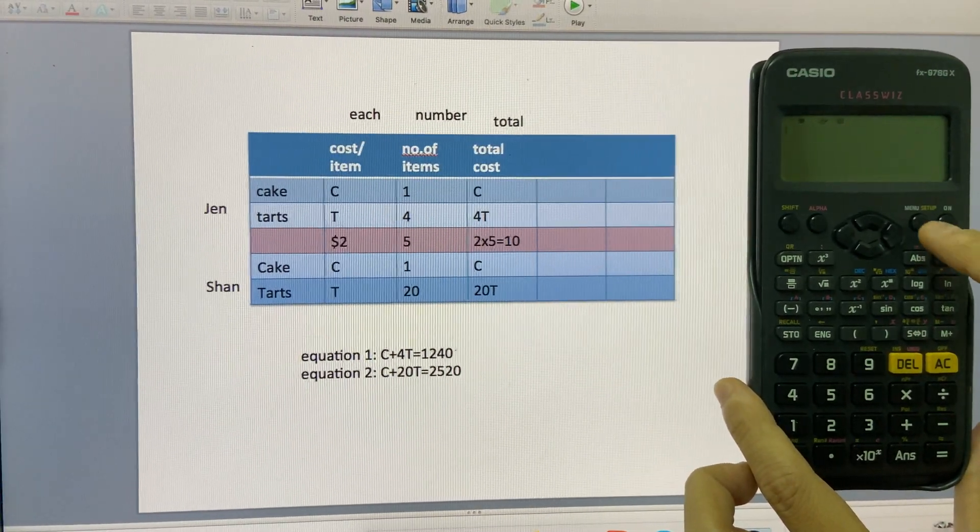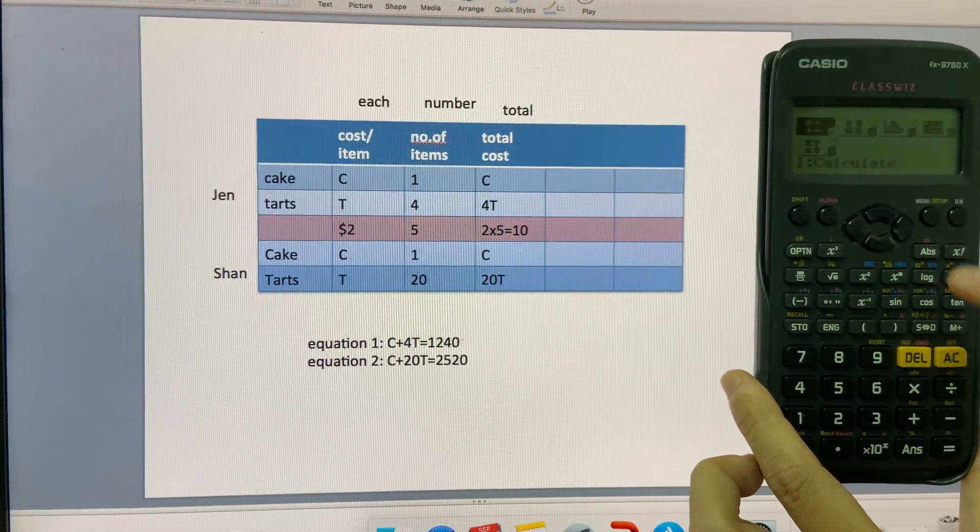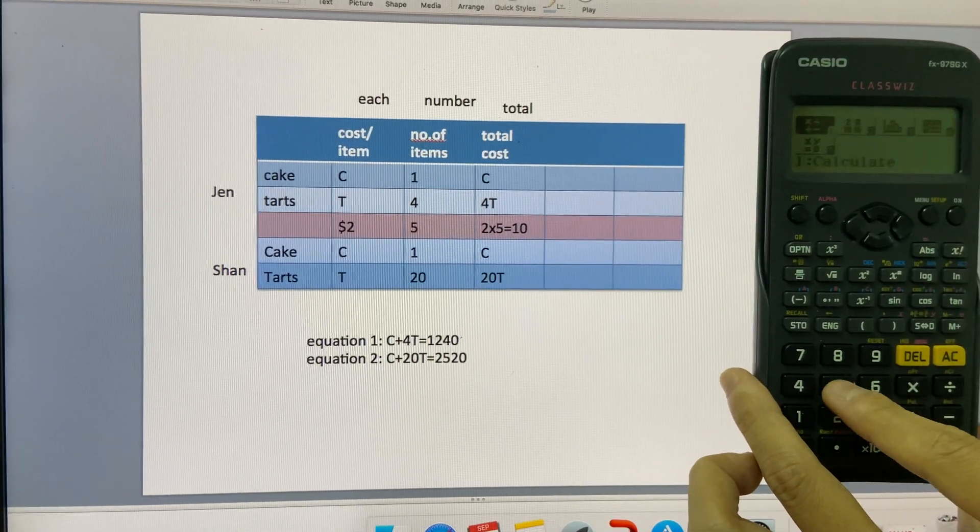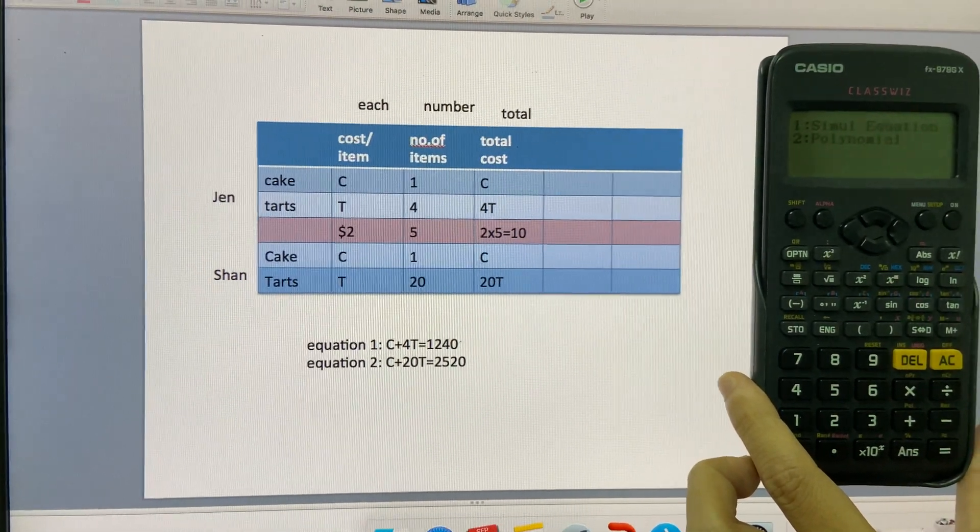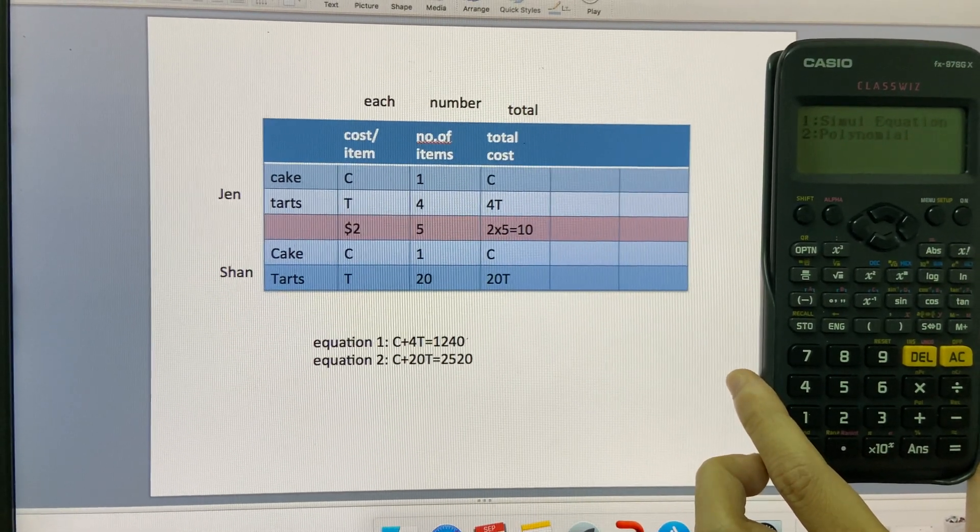First thing you need to do is go to setup. I hope you can see the setup here. And then choose 1, 2, 3, 4, 5. So choose 5. And then they ask whether you should choose option 1, simultaneous equation, or 2, polynomial.